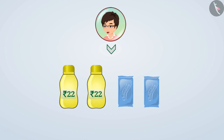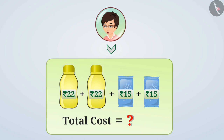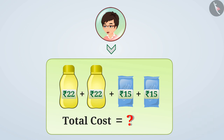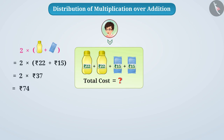If a juice bottle costs 22 rupees and a chocolate costs 15 rupees, what will be the total value of all the items? You can find it in two ways: you can find it by adding the cost of a bottle of juice and the cost of the chocolate and then doubling, or you can find the cost of two bottles of juice and the cost of two chocolates separately.